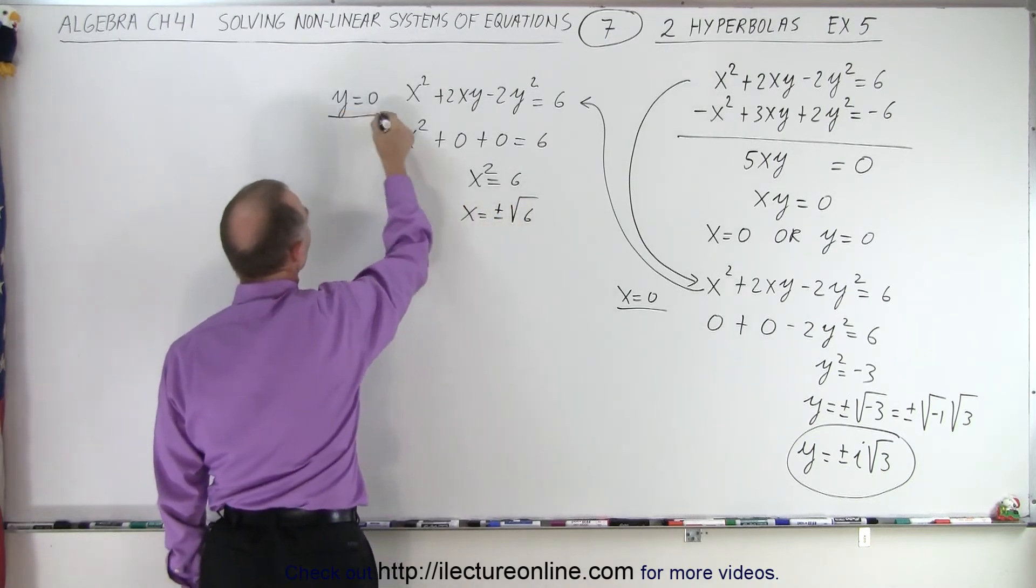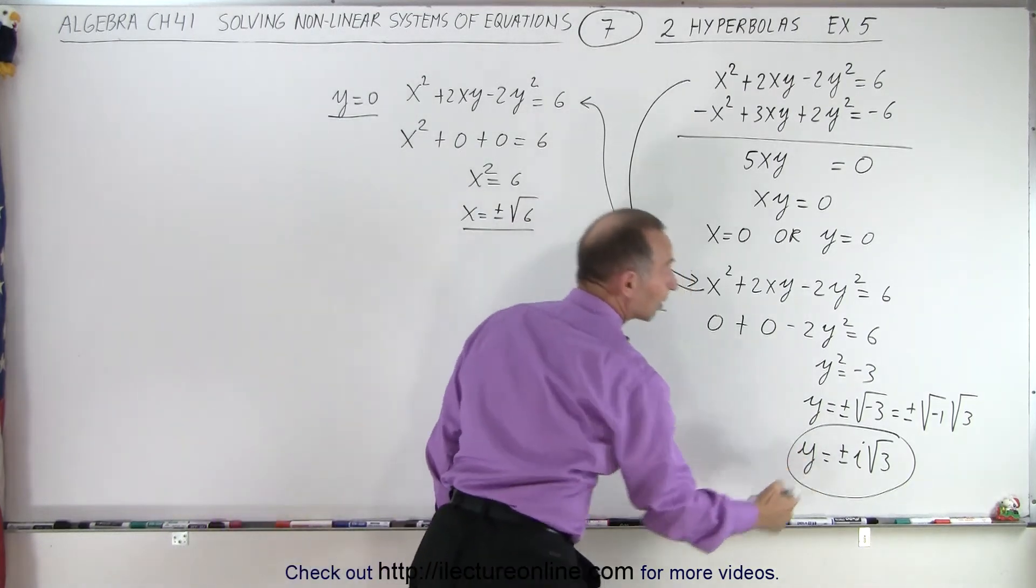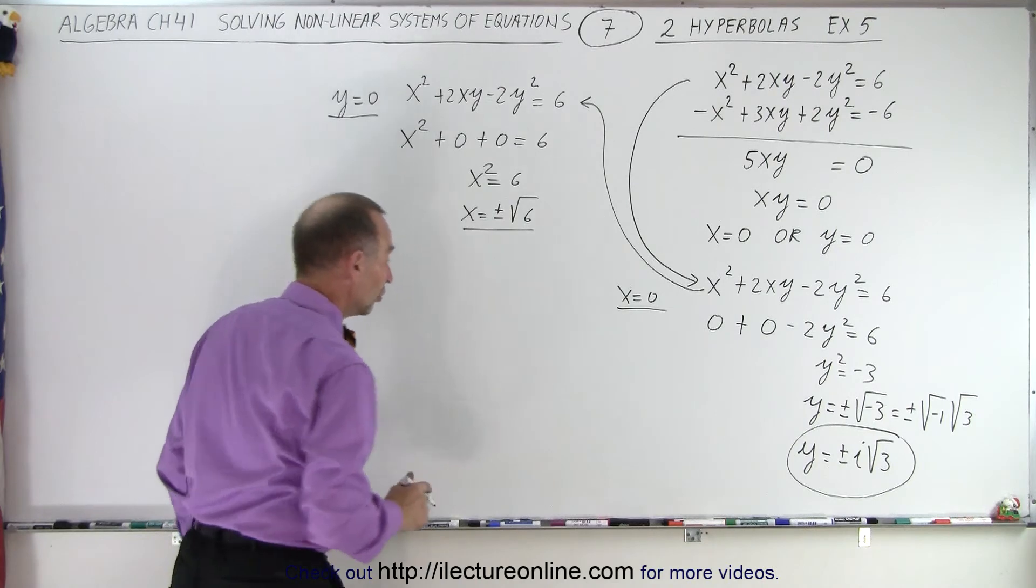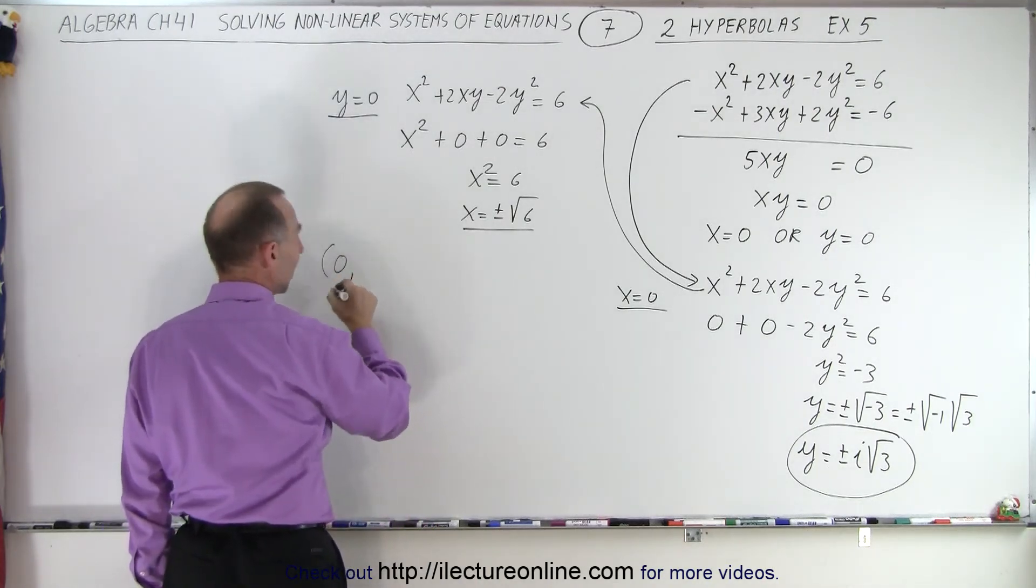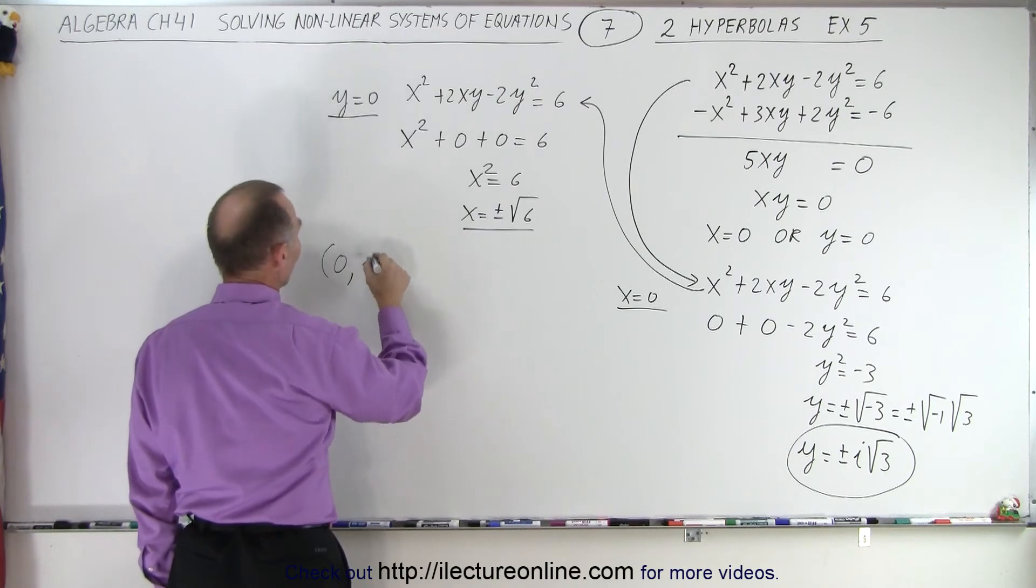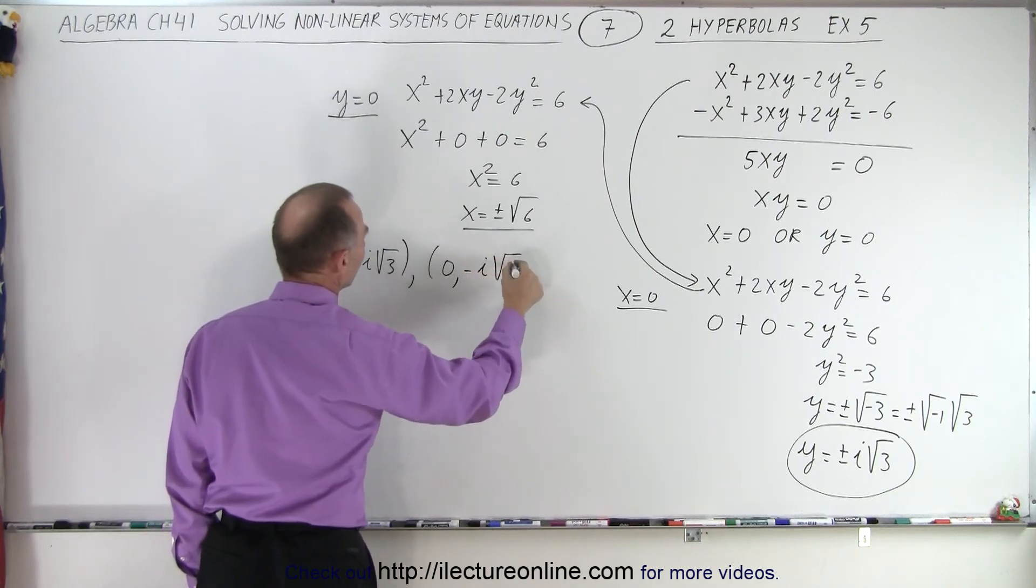So when y is 0, x is equal to this. When x is 0, y is equal to that. That gives us four possible solutions. Let's take a look. So starting with x equals 0, we have 0 comma plus i times the square root of 3. Or we have 0 comma negative i times the square root of 3.